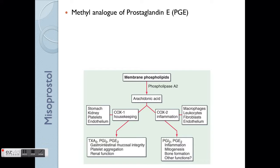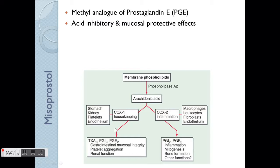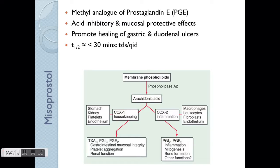Look at the role of Misoprostol — how does it work? Basically, it's a methyl analogue of prostaglandin E (PGE). The effect will mainly be in the stomach, so it acts the same way as the normal physiological prostaglandin E, whereby it's inhibitory on acid and also has mucosal protective effects. If you use it in combination with PPI or H2 antagonists, it actually promotes the healing of ulcers. The half-life is really short — just half an hour — so the person has to take it quite frequently, TDS or QID. It does cause some common side effects: diarrhoea and abdominal cramping.